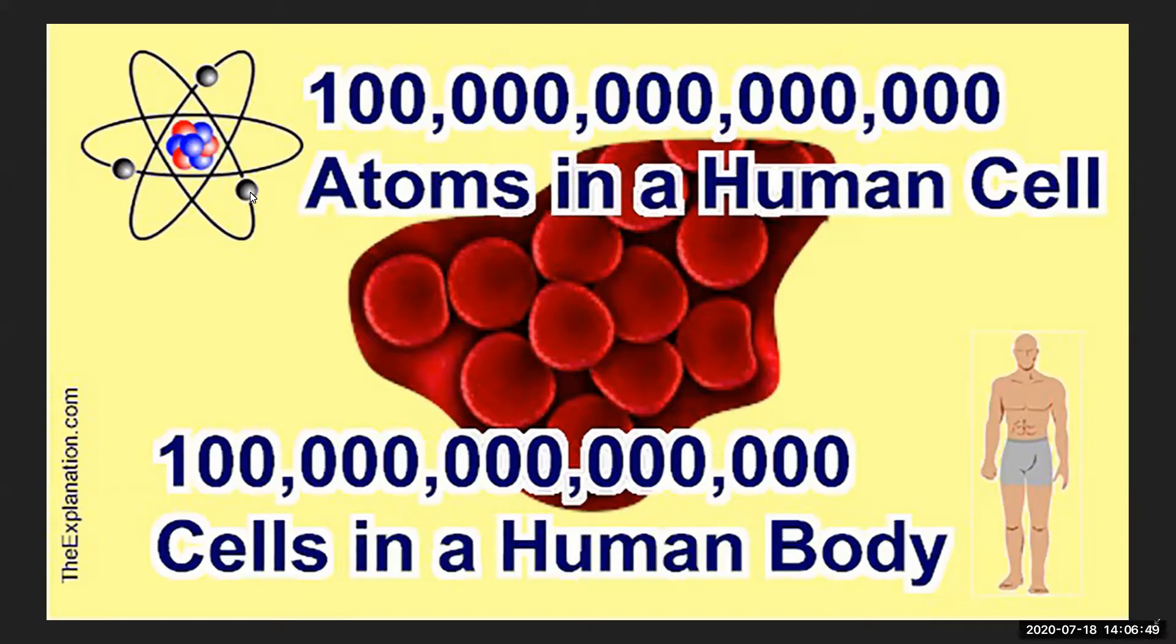The electrons are super tiny, they might not even have any size, but we know that atoms have size and there is approximately 100 trillion atoms in a human cell. Now there's approximately 100 trillion of these cells in a human body. So there's quite a few atoms in a human body, approximately 100 trillion times 100 trillion atoms in a human body.